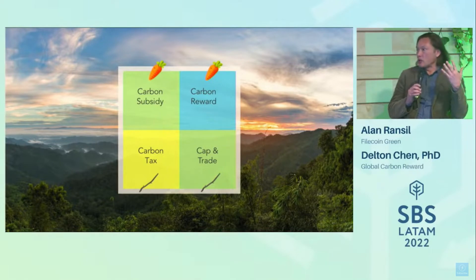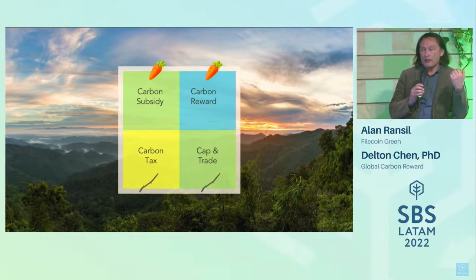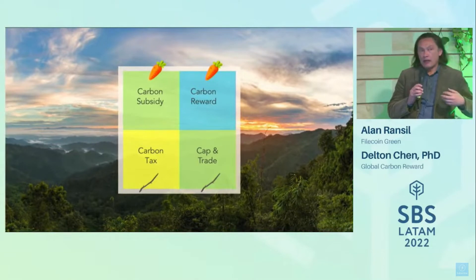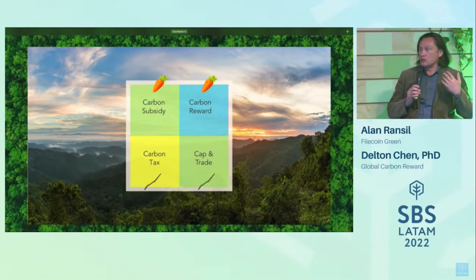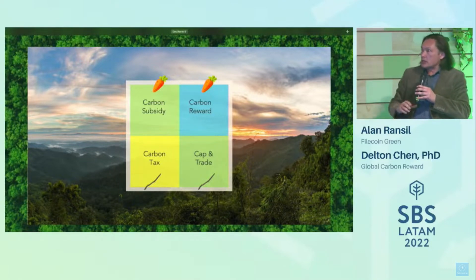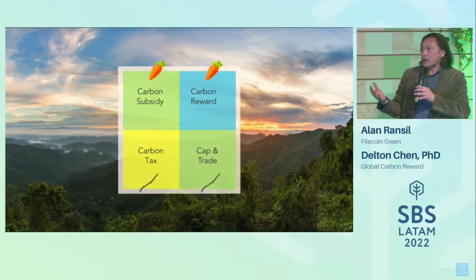If you listen to economists talking at conferences all around the world, they often focus on the negative externality — the social cost of carbon. They don't really have a theory yet for a global positive externality that can address all the risks. What I'm saying is the natural solution is the carbon reward in this matrix format, which provides the scalable funding for removal and conventional mitigation.